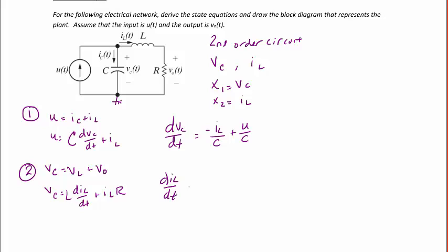And then we're going to solve the second equation for dil/dt. So dil/dt is equal to vc over L minus R over L il.